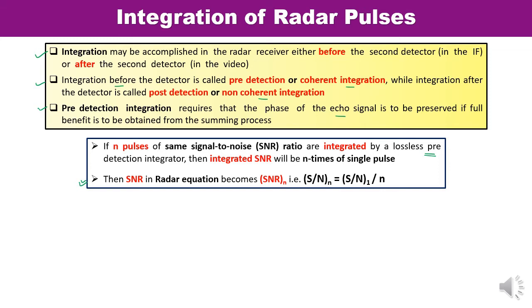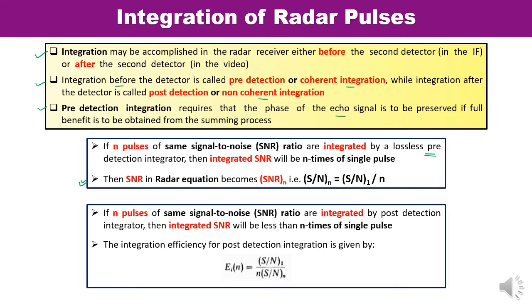Similarly, for the post-detection integrator: if N pulses all having the same signal-to-noise ratio are integrated by a post-detection integrator — after the second detector — then the integrated signal-to-noise ratio will be less than N times the signal-to-noise ratio of a single pulse. In pre-detection it equals N times, but here it is less than N times.